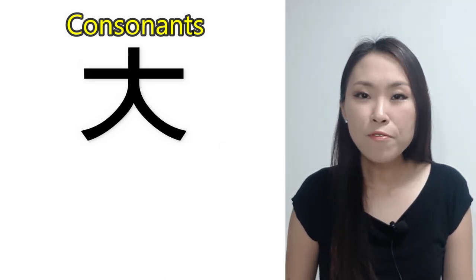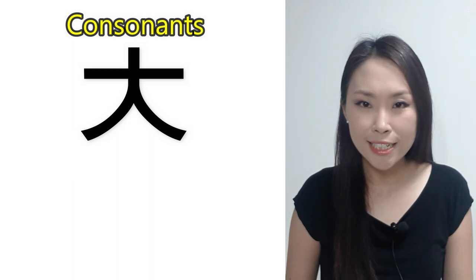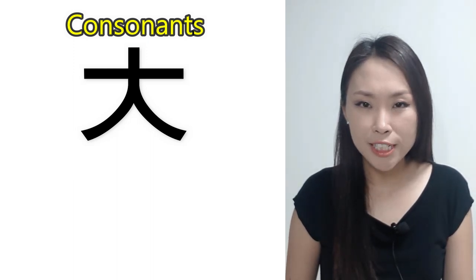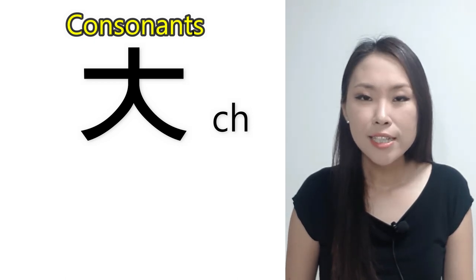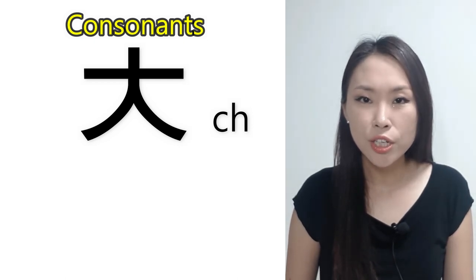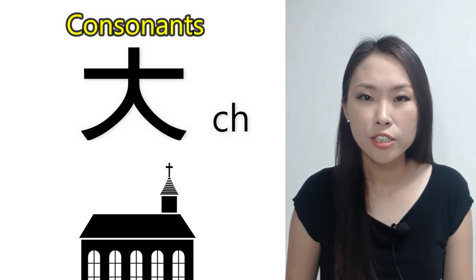The name of this consonant is 치읓. The romanized letter for 치읓 is CH. 치읓 sounds like the letter CH in the word church. 츠, 츠, 츠.